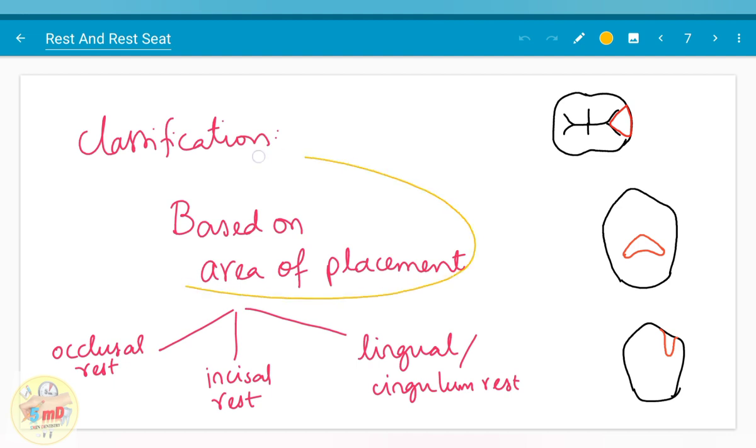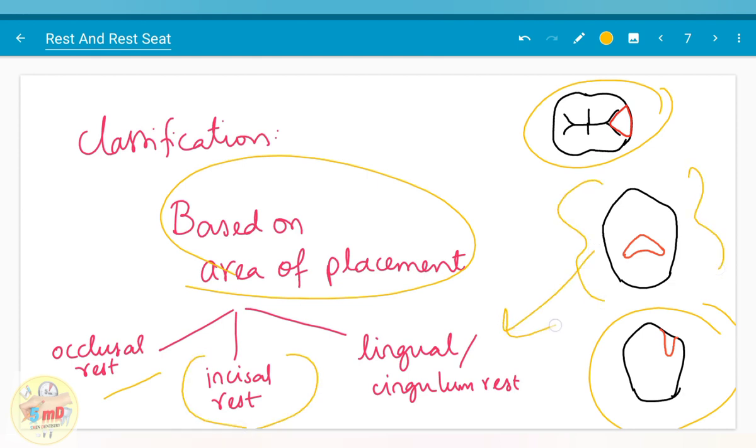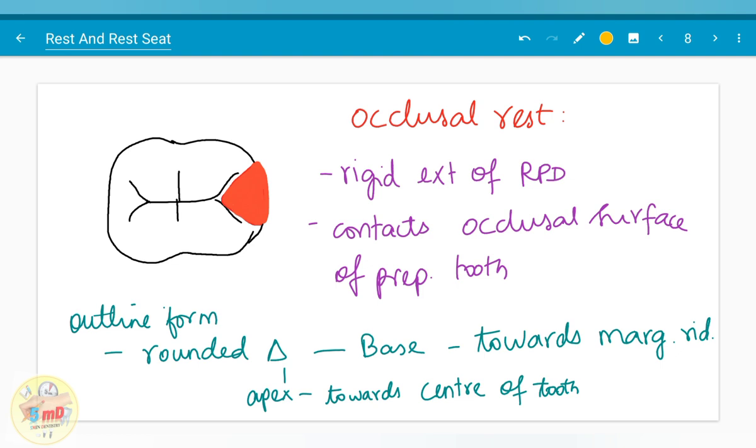It could also be classified based on the area of placement. If it is placed at the occlusal surface, it is occlusal rest. If it is in the incisal surface, it is incisal rest. If it is placed in the lingual or cingulum aspect, it is the lingual or cingulum rest. Now, let us see how to fabricate an occlusal rest.